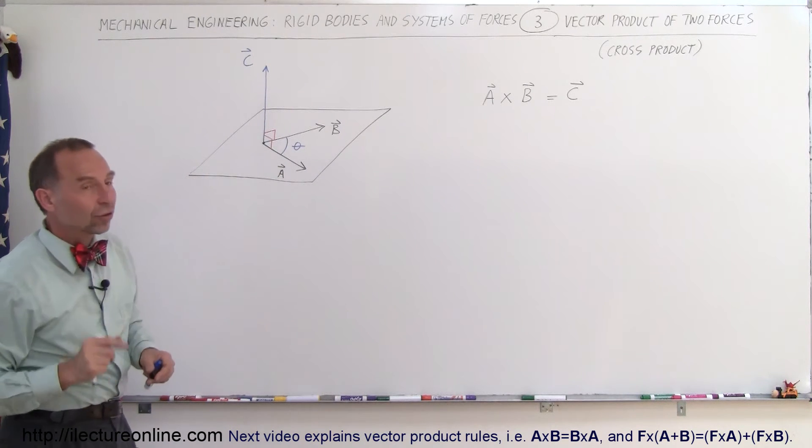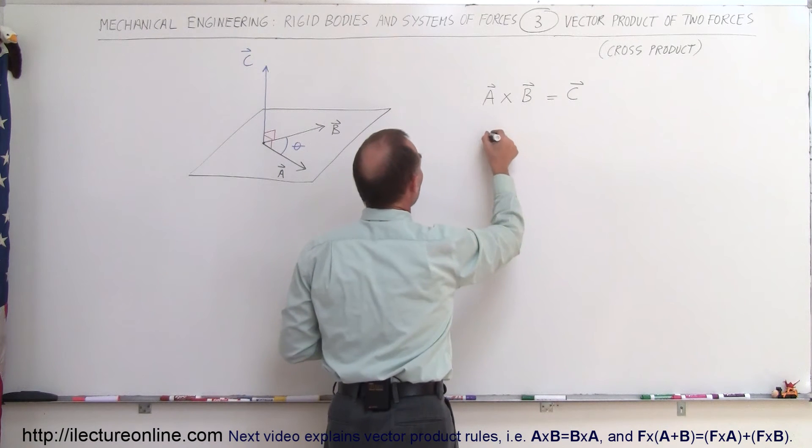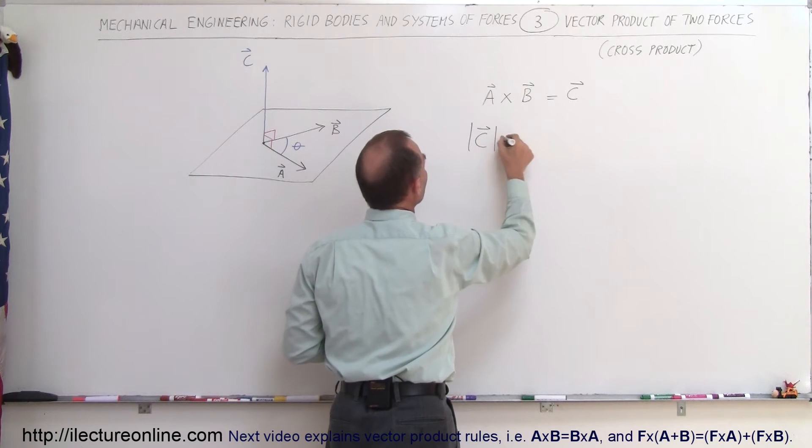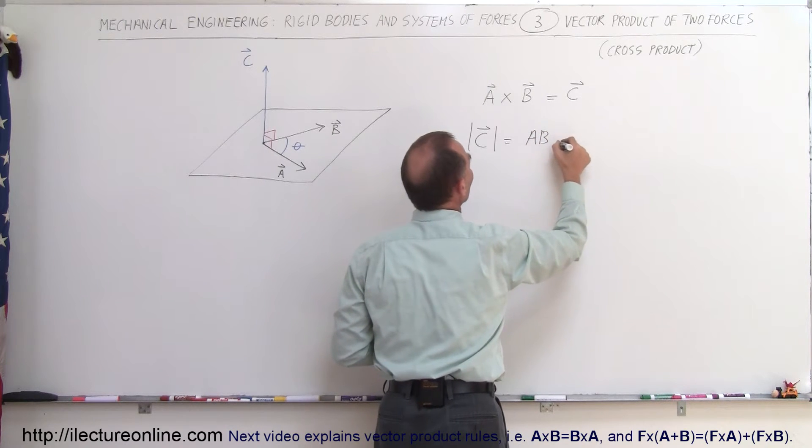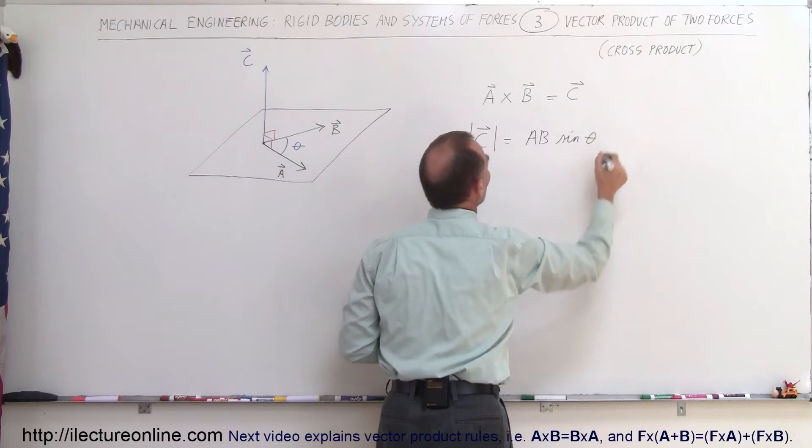Now the magnitude of vector C can be found as follows. The magnitude of vector C is equal to the magnitude of A times the magnitude of B times the sine of the angle between the two vectors.